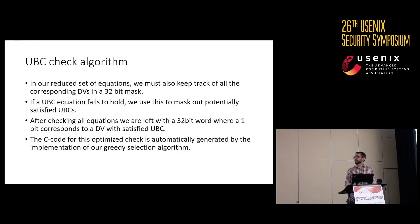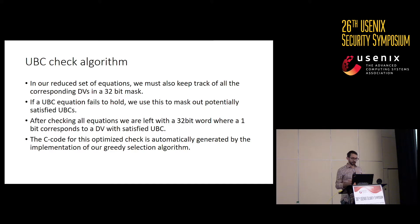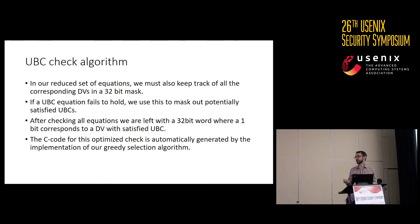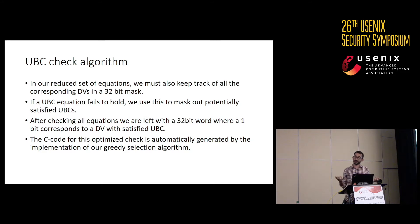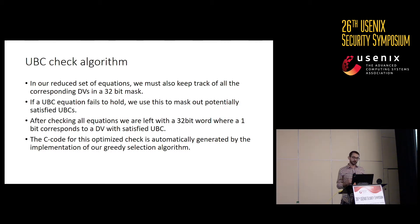Now that we have our reduced set of equations, the algorithm to check them is simple. We go through checking each equation, keeping track of which disturbance vectors each equation corresponds to using a 32-bit mask. That's why we increased the number of attack classes we're checking from 14 to 32 — we have enough space in this mask. Some of those disturbance vectors beyond the first 14 contribute to higher-complexity collision attacks, but we have the space to check them, so why not add them?